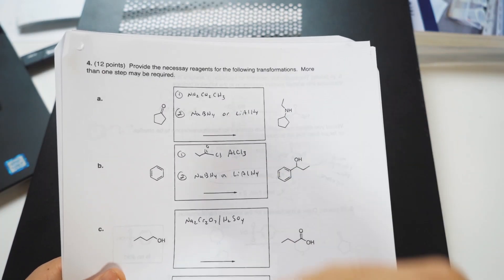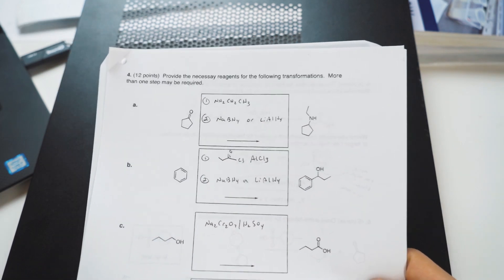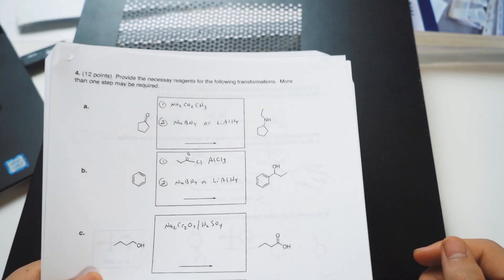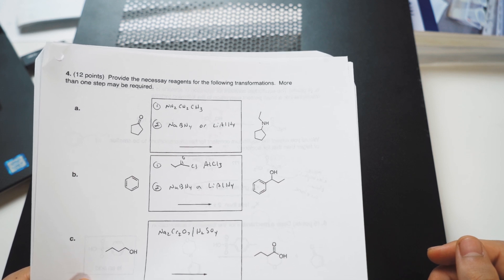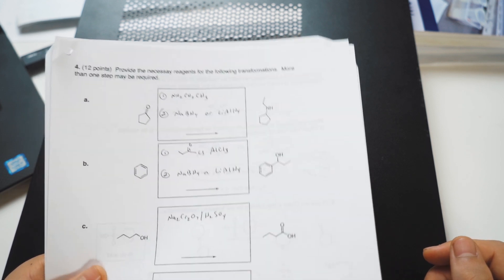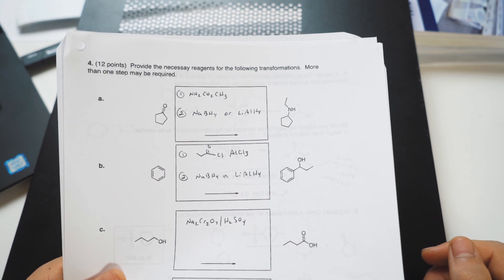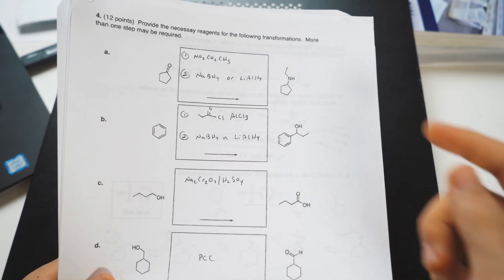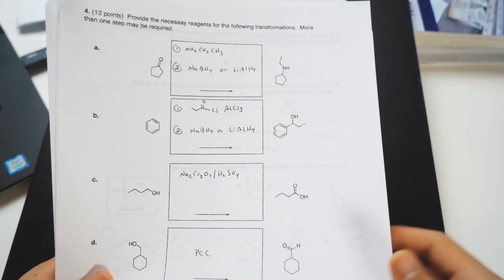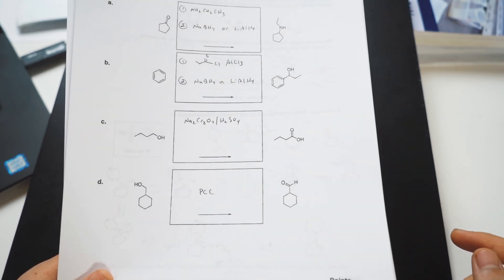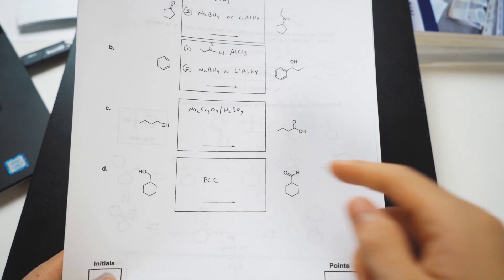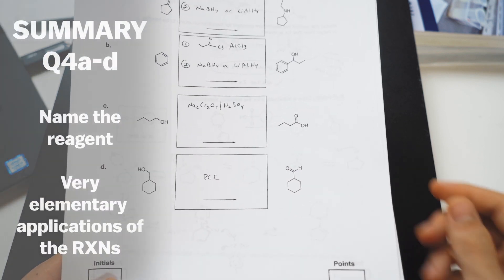And here they want you to name the reagents. Now here you have a reaction that probably goes to an amine, and then a reduction reaction. Something we went over in Orgo 2, but in general not too difficult. Friedel-Crafts acylation, and then a reduction, an oxidation reaction, pretty simple oxidation reaction at that, and then another oxidation reaction, pretty simple one as well.